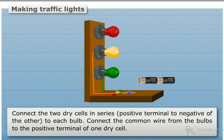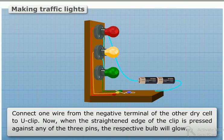Connect the two dry cells in series, the positive terminal to the negative of the other. To each bulb, connect the common wire from the bulbs to the positive terminal of one dry cell. Connect one wire from the negative terminal of the other dry cell to the U-clip.